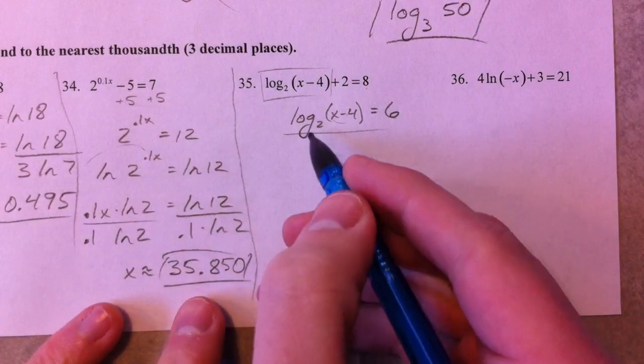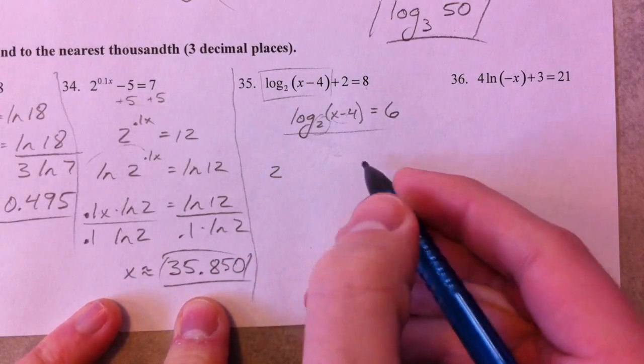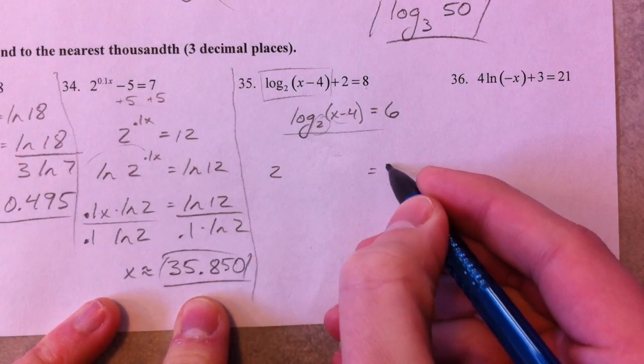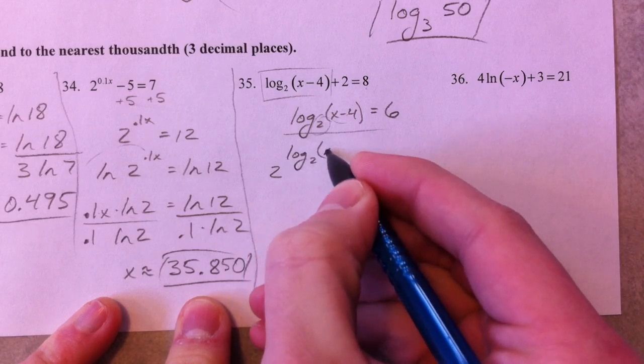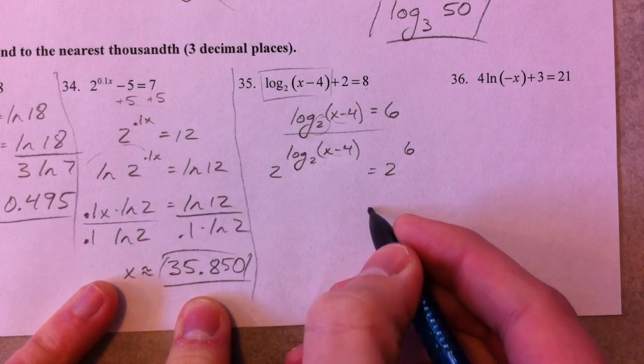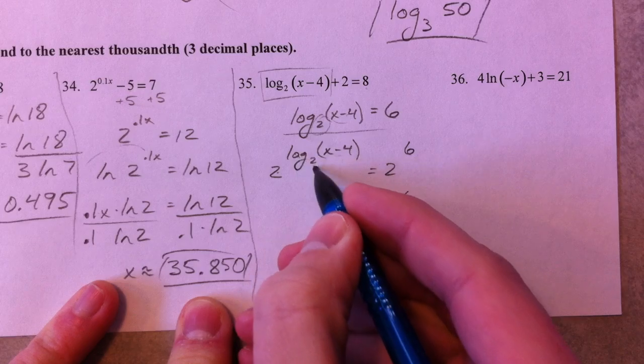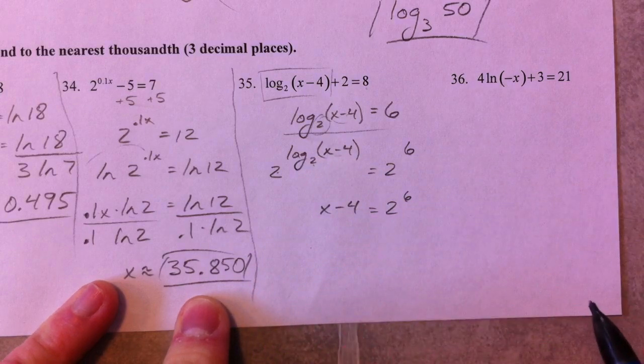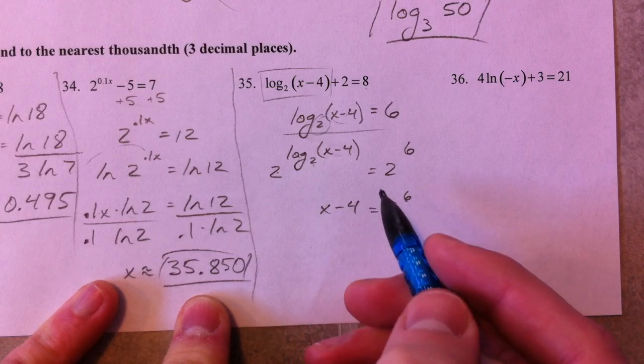You're not taking the log base 2 of anything. So instead of doing that, we counteract the log base 2 with raising it to the power. Both sides are going to become exponents. So I'm going to do 2 to the log base 2 of x minus 4. Notice what happens: 2 to the log base 2 becomes x minus 4. And this right here looks exactly like what we were doing before.